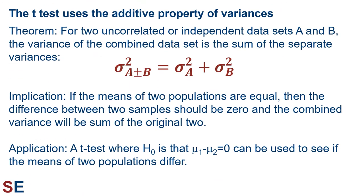The t-test uses the additive property of variances. There's a mathematical theorem that states that for two uncorrelated or independent datasets A and B, the variance of the combined dataset is the sum of the separate variances. The implication is that if the means of two populations are equal, then the difference between the two samples should be zero, and the combined variance will be the sum of the original two variances. From that combined variance, we could get a standard error and a confidence interval for that set of differences. If the confidence interval of the set of differences includes zero, that's what we would expect if the original two population means are the same. If it does not include zero, that's not what we would expect if the two original population means are the same. The application is that a t-test of the differences, where the null hypothesis is that the differences equal zero, can be used to see if the means of two populations are different.